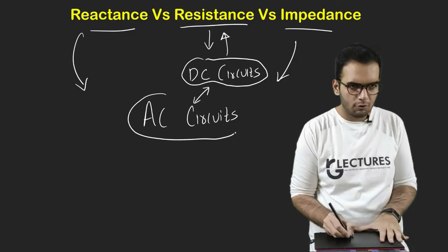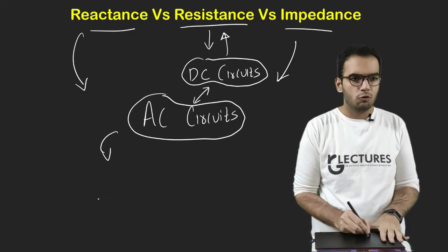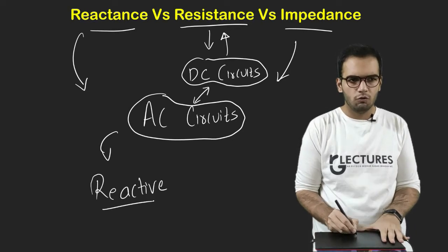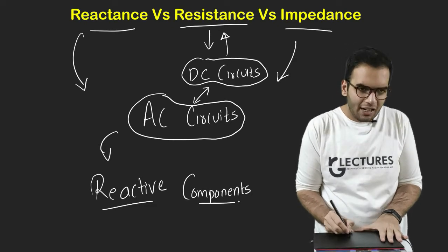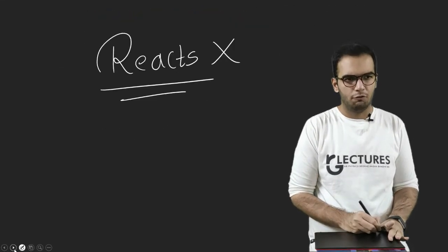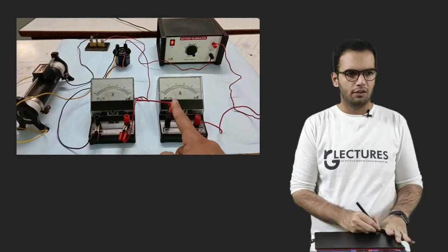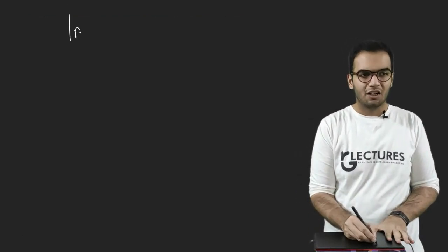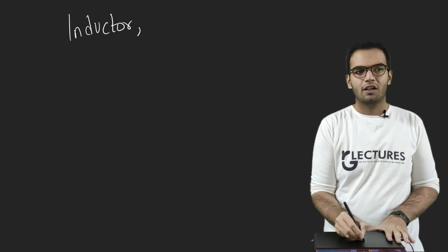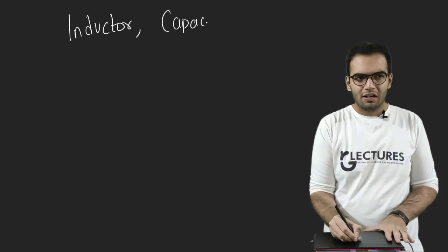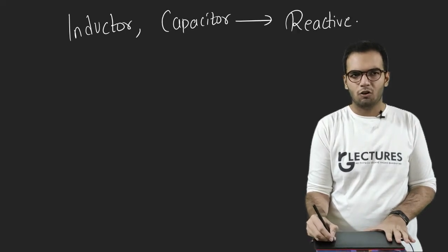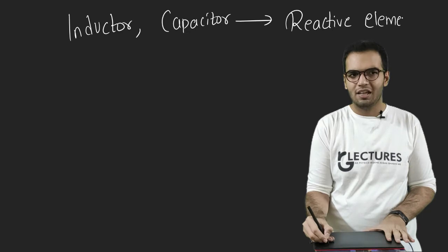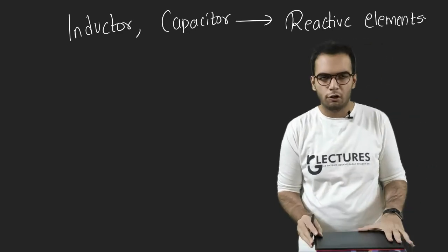But when we talk about AC circuit, we use reactive components. We use reactive components which react to the changes in the circuit. For example, if we consider an AC circuit, we consider inductor, we consider capacitor. Now, these elements are reactive elements. These elements are called as reactive elements. They react to whatever changes I will do in my circuit.